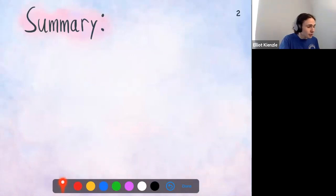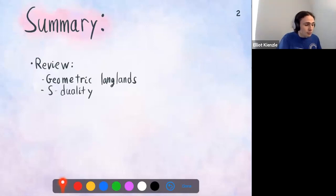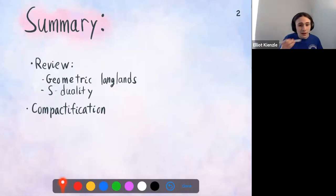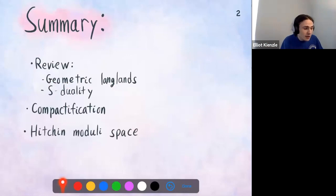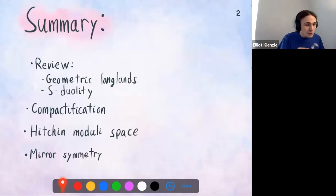Let me just start by summarizing what I'm going to be going through. I'll start with a little bit of a review of the stuff that Steven and Sid talked about, just enough to get our bearings so that we know where we're trying to go — talking about what the geometric Langlands conjecture actually is and then what S-duality is. Then I'm going to be compactifying our S-duality in four dimensions to two dimensions, which will give us a Higgs moduli space, and that has mirror symmetry.